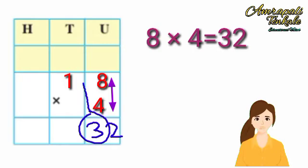32 units make 3 tens. Write these 3 tens in the tens place at the top and the 2 units under the line in the units place.